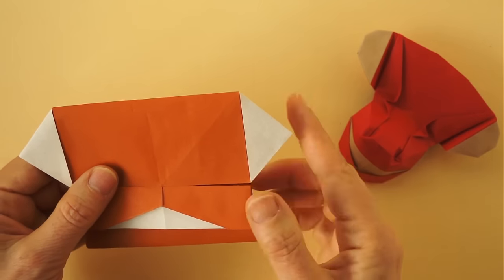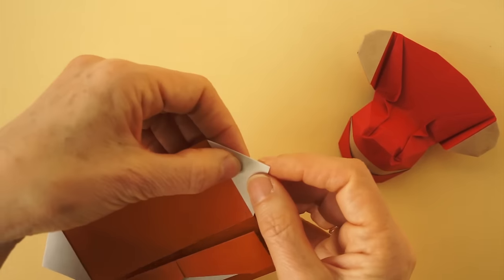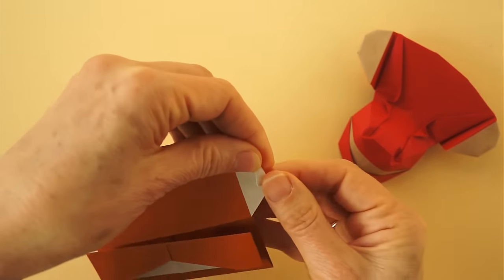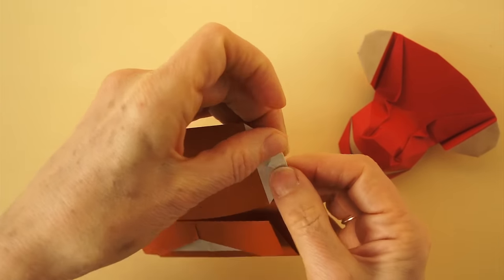Now we are going to blunt these two corners to shape the ears, just a little bit.